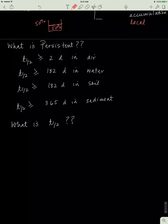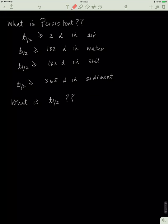How do we classify something as persistent? POPs have a large half-life. If something can stay in air for greater than two days, that's called persistent. If the half-life is greater than or equal to 182 days in water, it's persistent, and so on.